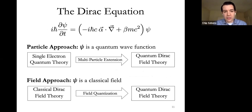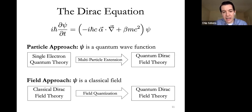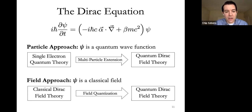To understand the disagreement between the particle and field approaches, consider how they understand the Dirac equation. On the particle approach, psi in the Dirac equation is a quantum wave function—a four-component function—and the Dirac equation is like the Schrödinger equation for a single particle, with the move to quantum field theory being an extension to a multi-particle relativistic theory. On the field approach, psi is a classical field, the Dirac equation is like Maxwell's equations for psi, and the move to quantum field theory is field quantization.